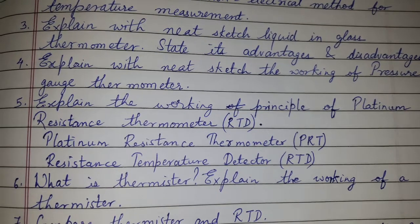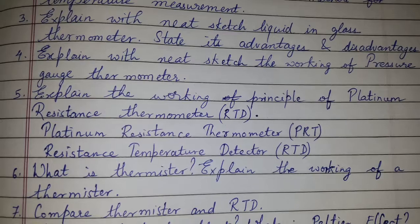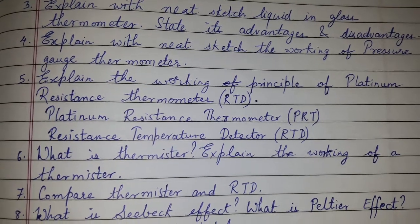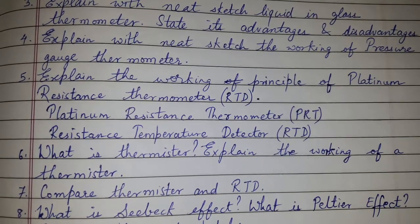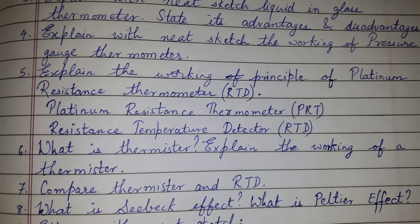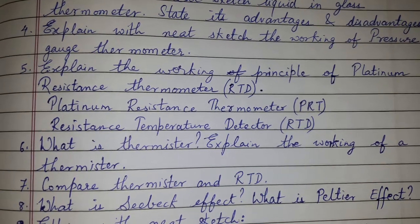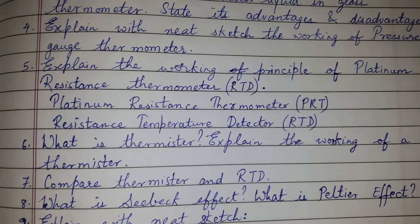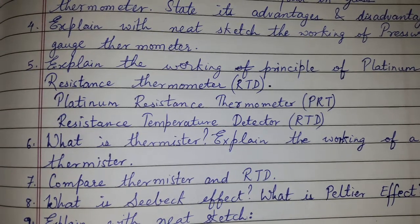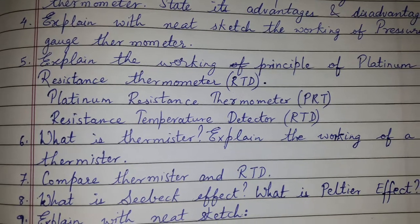Next topics include: explain with neat sketch the working of a pressure gauge thermometer, and explain the working principle of the platinum resistance thermometer. The platinum resistance thermometer is also known as PRT or resistance temperature detector, RTD — any one name can be used, so don't get confused by the short forms.